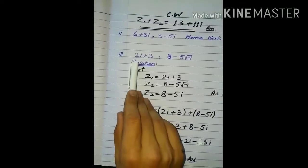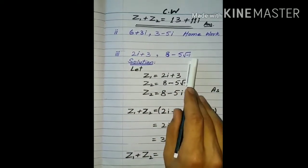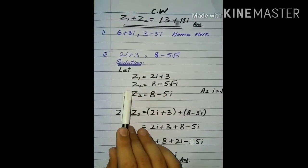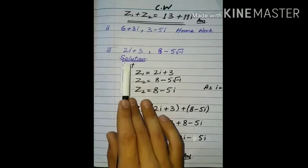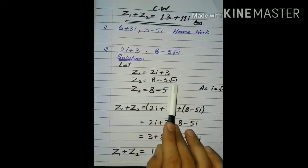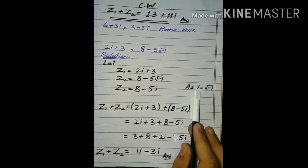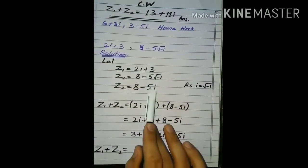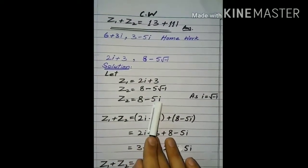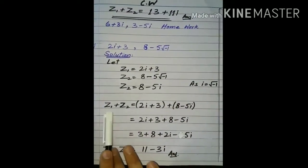تیسرا question ہمارے پاس ہے: 2 iota plus 3 اور 8 minus 5 under root minus 1۔ تو پہلے ہم ان دونوں کو name دیتے ہیں — complex number کو ہم Z سے represent کرتے ہیں۔ یہ ہمارے پاس first one Z1 سے represent کر لیا ہے اور دوسرا Z2 سے۔ اس میں under root minus 1 ہے۔ آپ لوگوں نے یاد رکھنا ہے کہ iota کی value under root minus 1 ہے، تو اس under root minus 1 کی جگہ پر iota لگا سکتے ہیں۔ تو Z2 ہمارے پاس 8 اپنی جگہ پر، minus 5 اپنی جگہ پر، اور under root minus 1 کی جگہ پر iota لگا لیا ہے۔